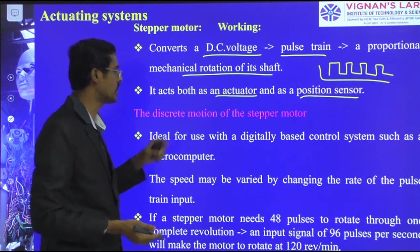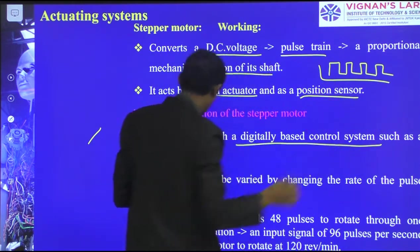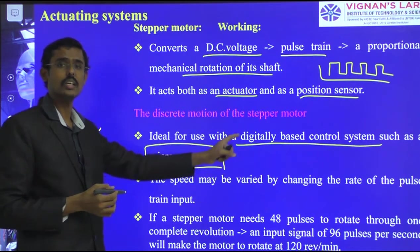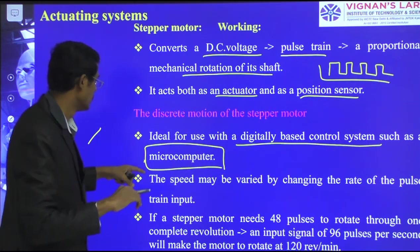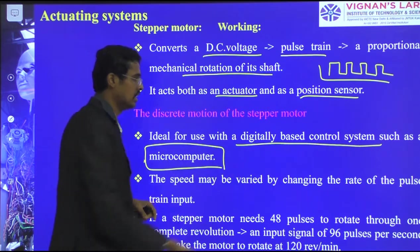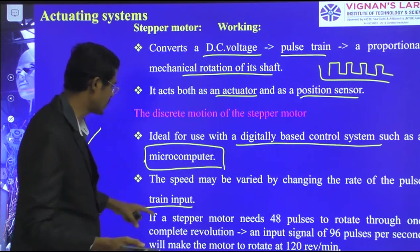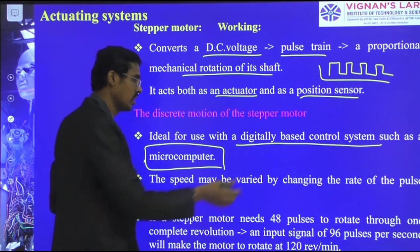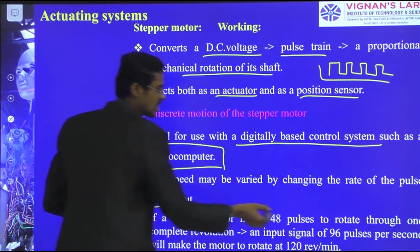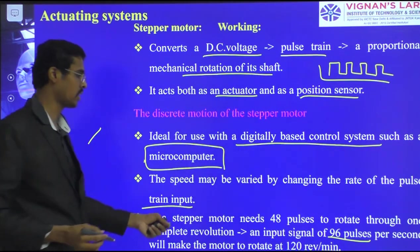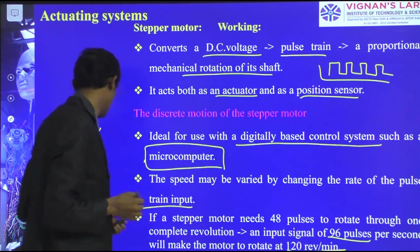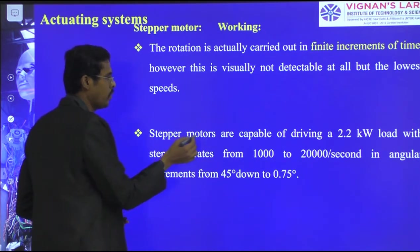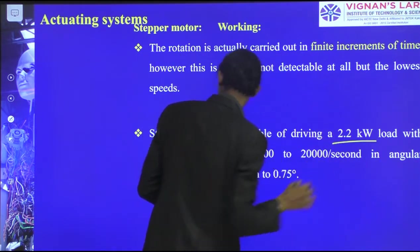The discrete positioning of the stepper motor makes it ideal for use with digitally connected control systems such as microcomputers. The stepper motor is controlled by microprocessor-based computer systems. Speed may be varied by changing the rate of pulse train inputs. If the stepper motor needs 45 pulses to rotate one revolution, an input signal of 96 pulses per second will make a rotation of 120 revolutions per minute.